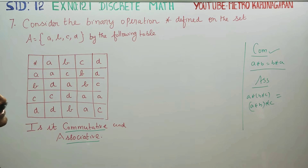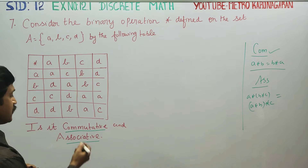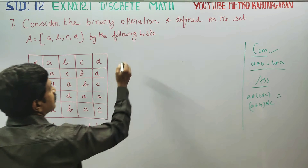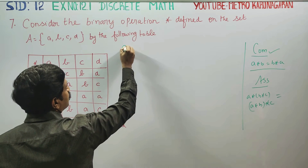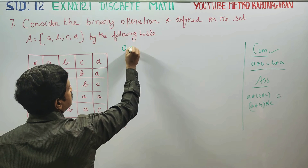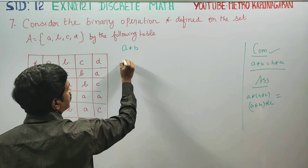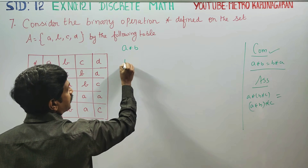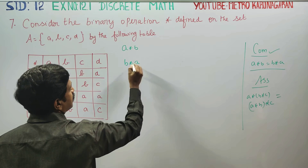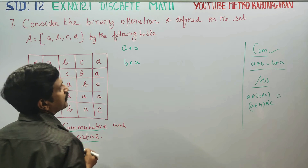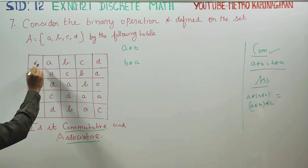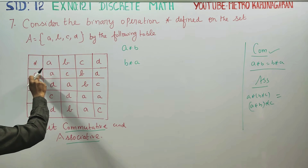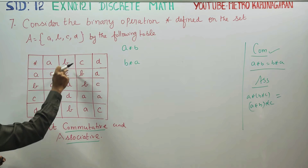First we will start with commutative. I am going to find a★b from the table, and then next I am going to find b★a from the table. We will refer to the table and start with a★b.